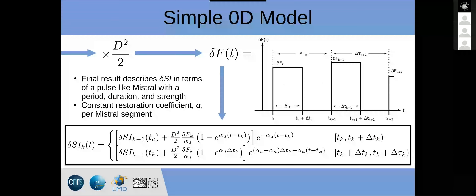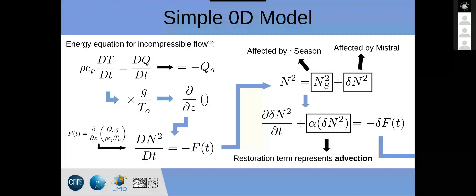Question from audience: Where does the alpha term depend on the seasonal stratification? There's a non-linearity in the advection — how do you separate both even with a non-linear equation? Response: I'm not really separating it; I'm just swapping in this proportional term to replace the non-linear terms. It's more of a simplification. It's an approximation — I'm approximating the advection terms with the proportional coefficient.